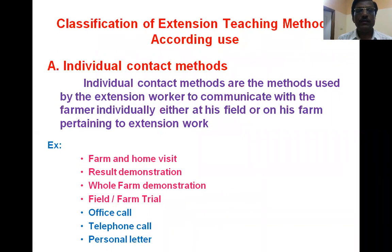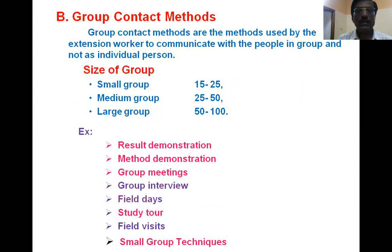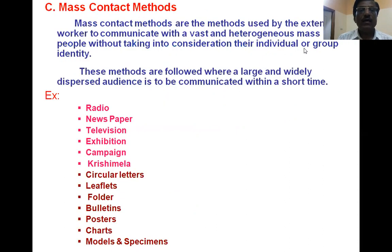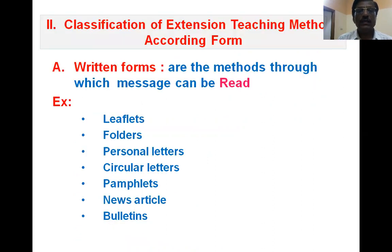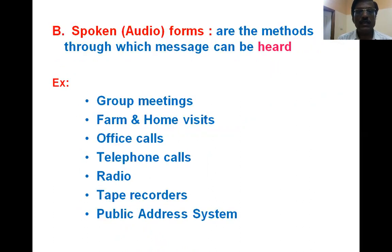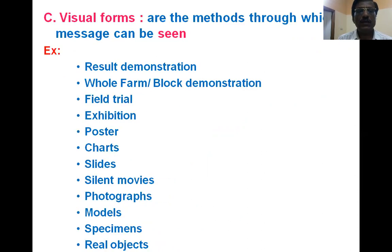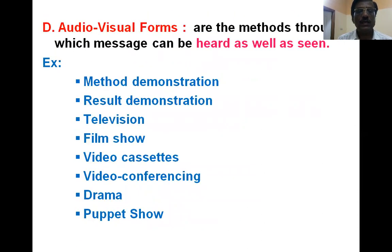These are the examples of individual contact methods, group contact methods, and mass contact methods already covered in the last class. Classification of extension teaching methods according to form: written forms, spoken forms, visual forms, and audio-visual forms — these are the examples. All these things were already covered in the last class.